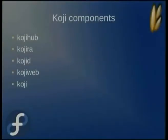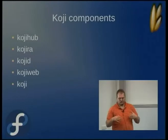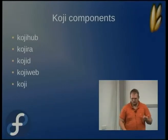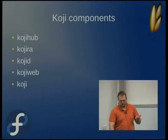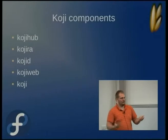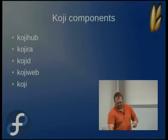Koji itself has a bunch of components. These are the ones that deal with RPM building: Koji Hub, which is the central brains; Koji Raw, which is a repo administrator; Koji D, which does the building; Koji Web, which is a front end; and the Koji command line.